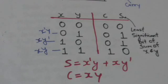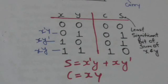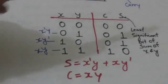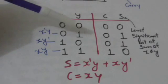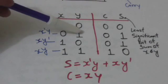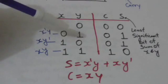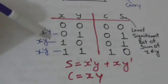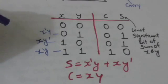Now we have to obtain the boolean functions for output variables S and C. Looking at the table, S is one in two rows: when X is zero and Y is one, and when X is one and Y is zero. The minterm corresponding to the first case is X̄Y, and for the second case is XȲ. So S equals X̄Y plus XȲ.